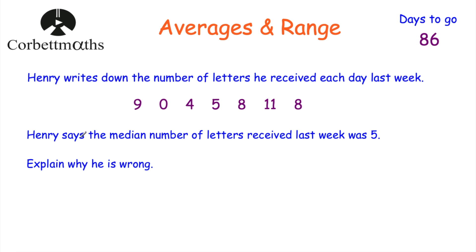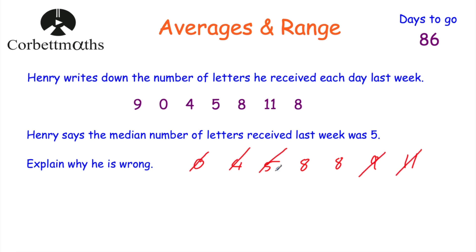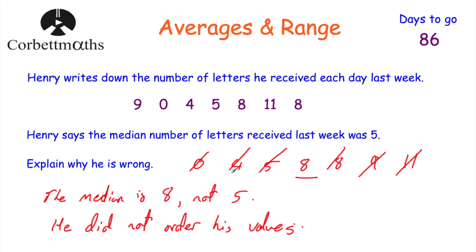To find the median, Henry needs to arrange the numbers in order from smallest to largest: 0, 4, 5, 8, 8, 9, 11 — seven values. Cross off the smallest and biggest, the next smallest and biggest, then the smallest and biggest. We're left with eight in the middle. So the median number of letters Henry received last week was eight, not five. He didn't order his values. The median is eight, not five, because he didn't arrange them in order.